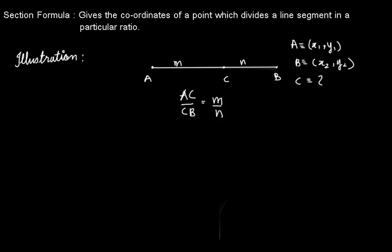The section formula gives us the coordinates of C by this formula: ((nx₁ + mx₂)/(m + n), (ny₁ + my₂)/(m + n)). Correspondingly, for the y-coordinates, n into y₁ plus m into y₂ upon the sum of the ratio m plus n.